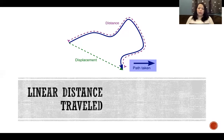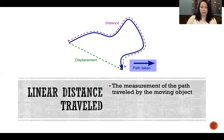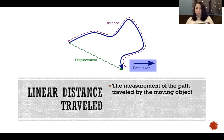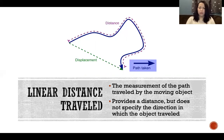Linear distance traveled is the measurement of the path traveled by the moving object. If we look at our picture here, it's the dark blue line with the arrow at the end — that whole line is the linear distance traveled. It's the actual path and the actual distance traveled by whatever is moving. It provides a distance but doesn't specify the direction that the travel took place.